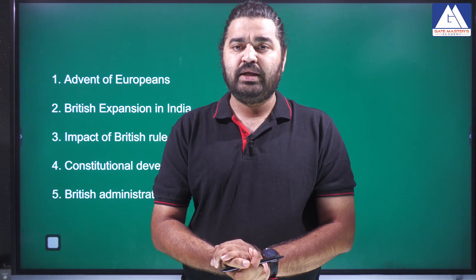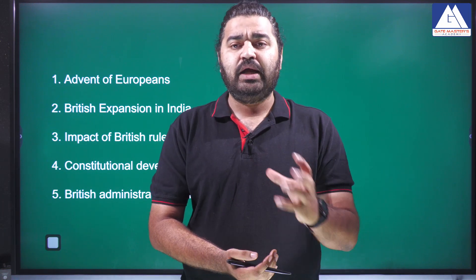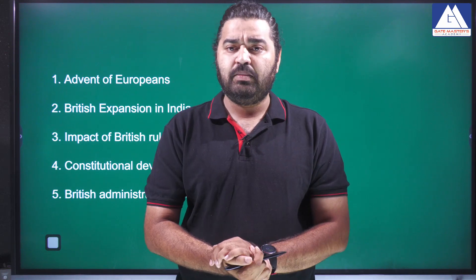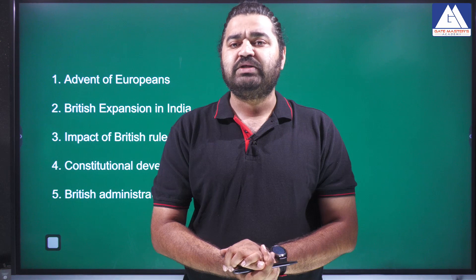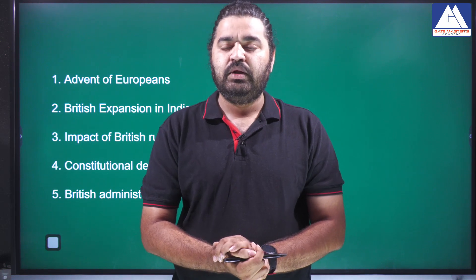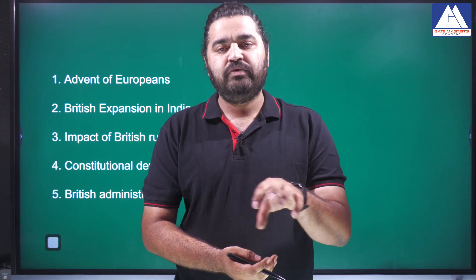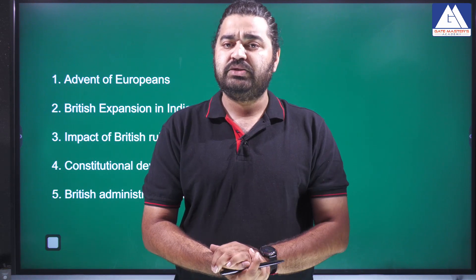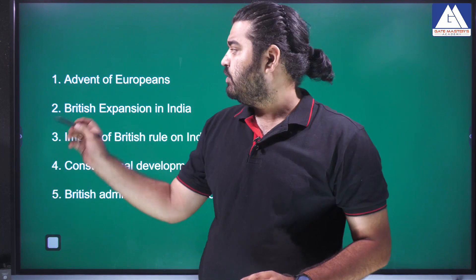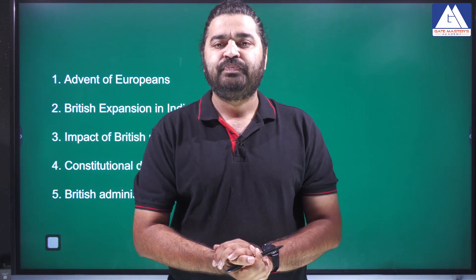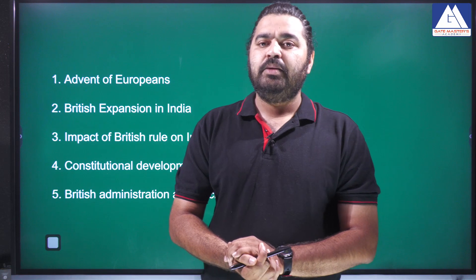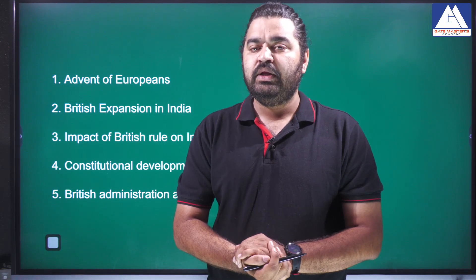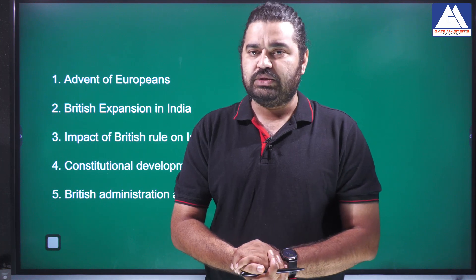Out of these five European powers, only the British managed to strongly establish themselves. Among all five European powers, only the British were able to sustain and hold on. In the first chapter on the advent of Europeans we examine why. In the second chapter on British expansion in India, we look at how the British strongly established themselves across India and the wars they fought.